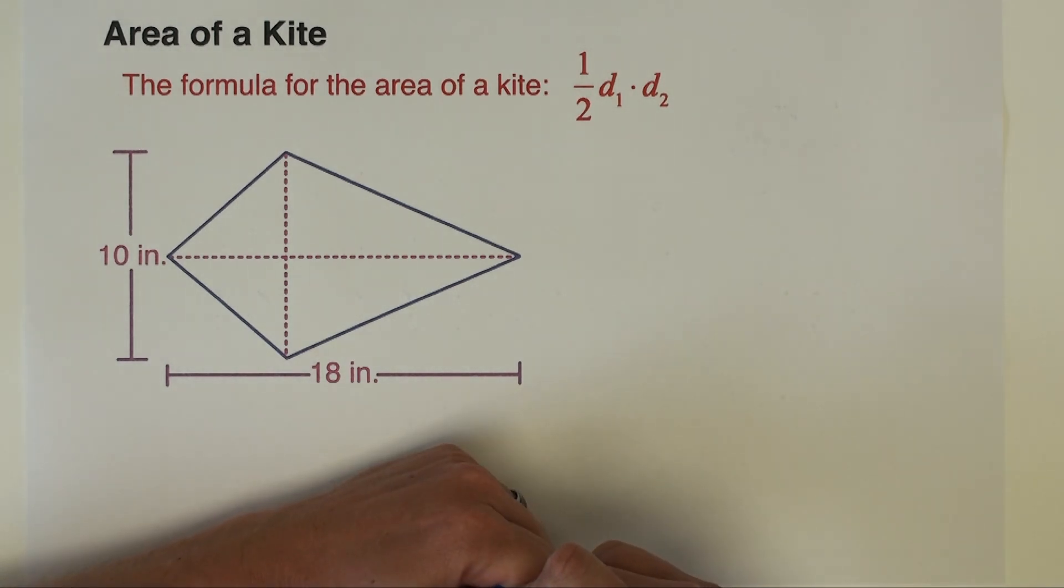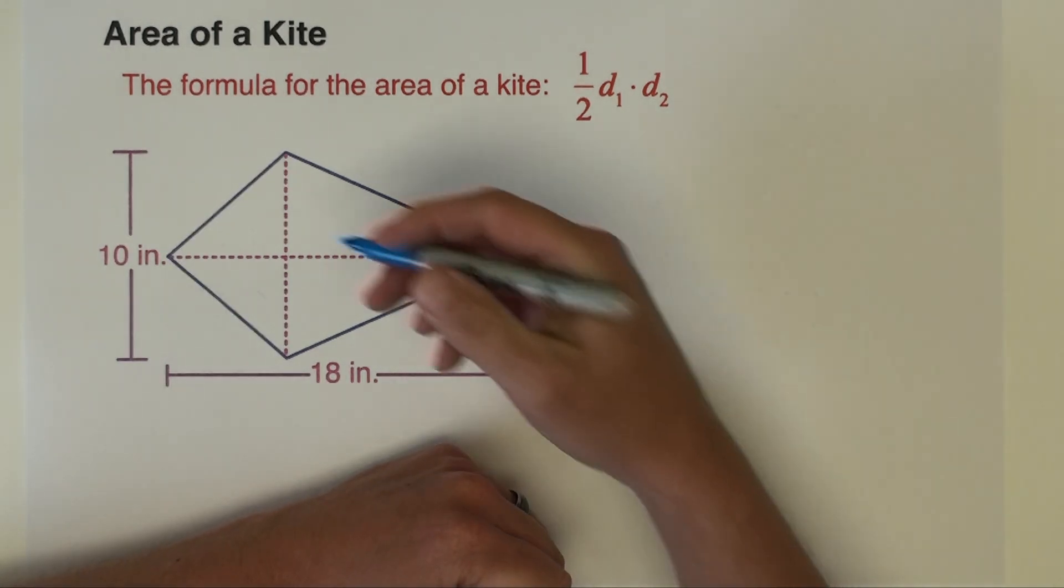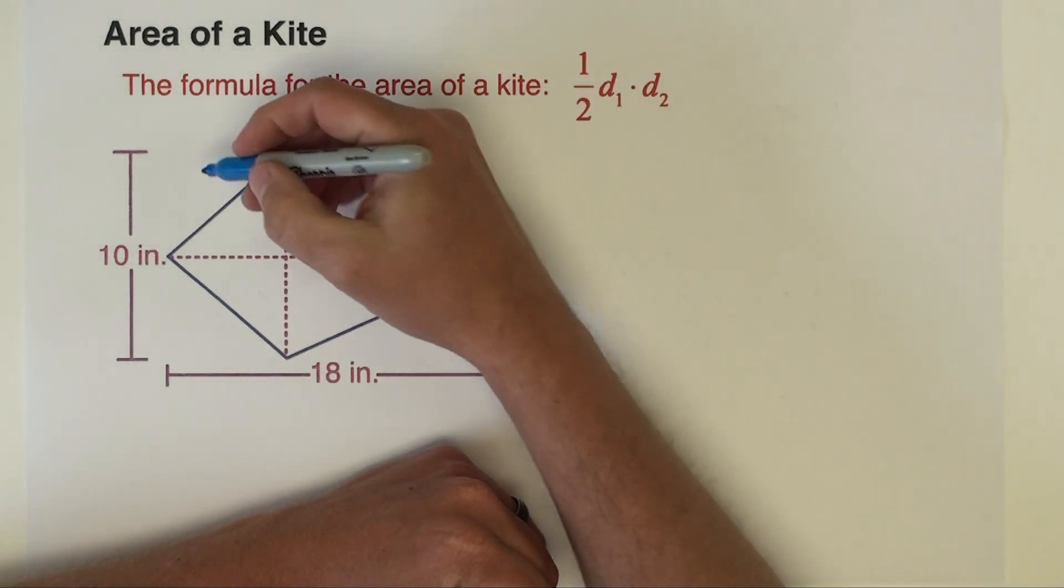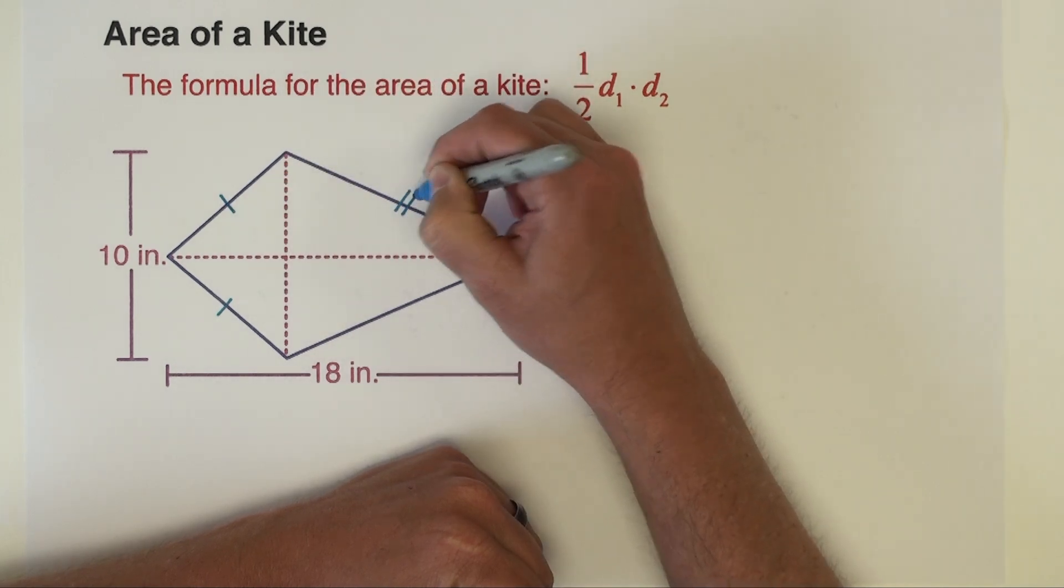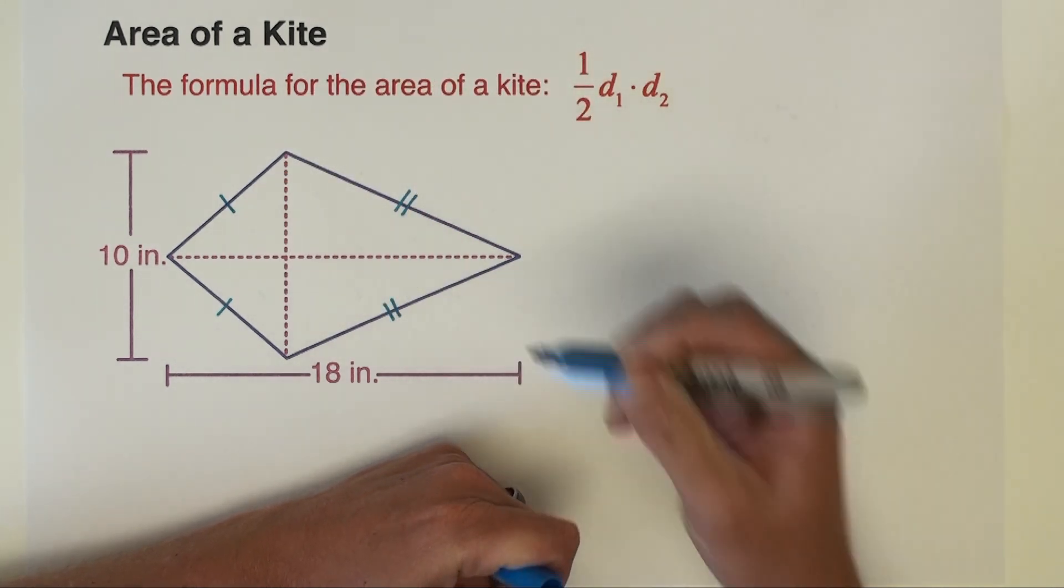Now, a kite is a quadrilateral in which consecutive sides are congruent. So we'd have to know that this side is congruent to this side and this side is congruent to this one.